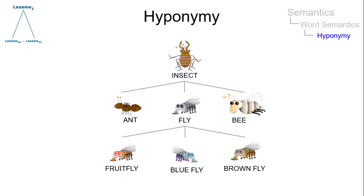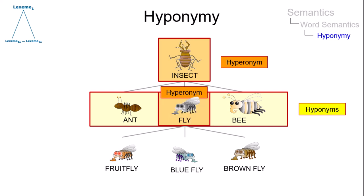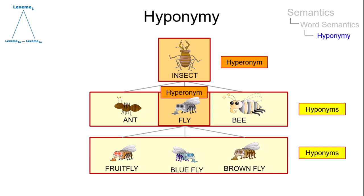In complex hierarchies, hyponyms can also be hyperonyms. The lexemes ant, fly, and bee are hyponyms of the hyperonym insect, and fly in turn is a hyperonym of fruit fly, blue fly, and brown fly. The lexemes insect and fly are therefore hyperonyms of the concepts that are lower in the hierarchy.